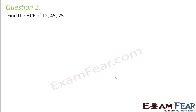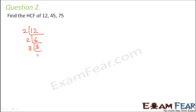Find the HCF of 12, 45 and 75. You can even find HCF between three numbers — this is going to be interesting. Let's do prime factorization of 12. So 12 can be written as 2 into 2 into 2 into 3.